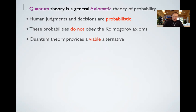We know from behavioral research that human judgments and decisions tend to be probabilistic. Not only that, but these probabilities seem not to obey the Kolmogorov axioms that are the foundation of classical probability. Quantum probability theory is a generalization in ways, and so it might provide a viable alternative. But you might think that's kind of a shot in the dark — why pick a quantum model?